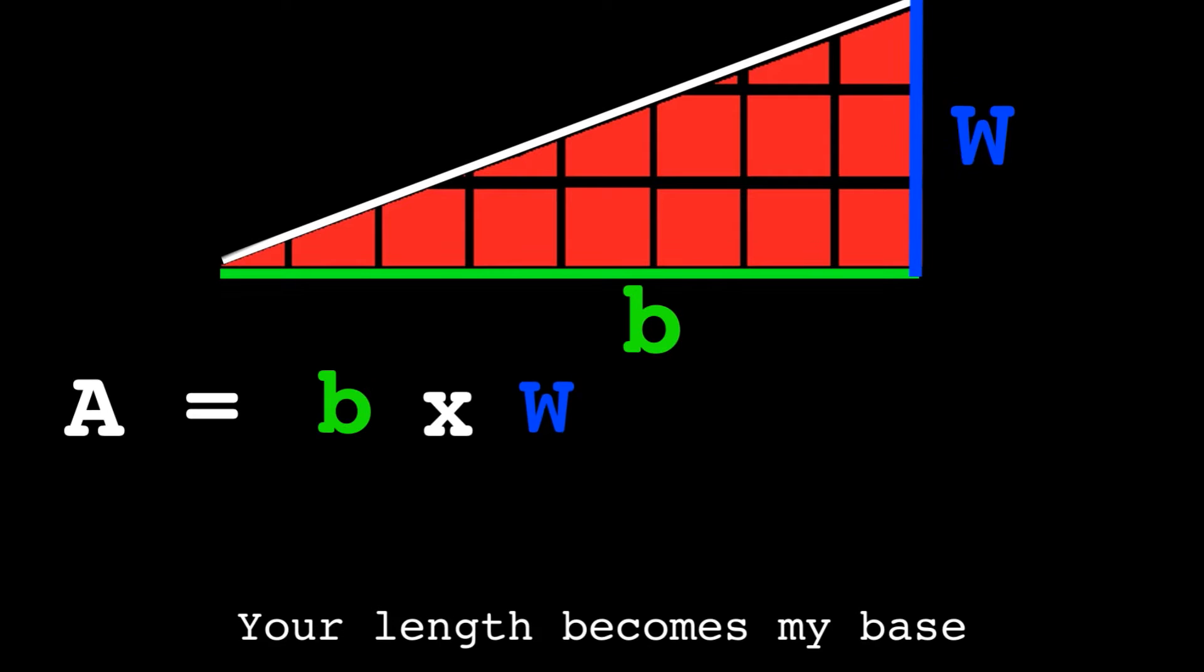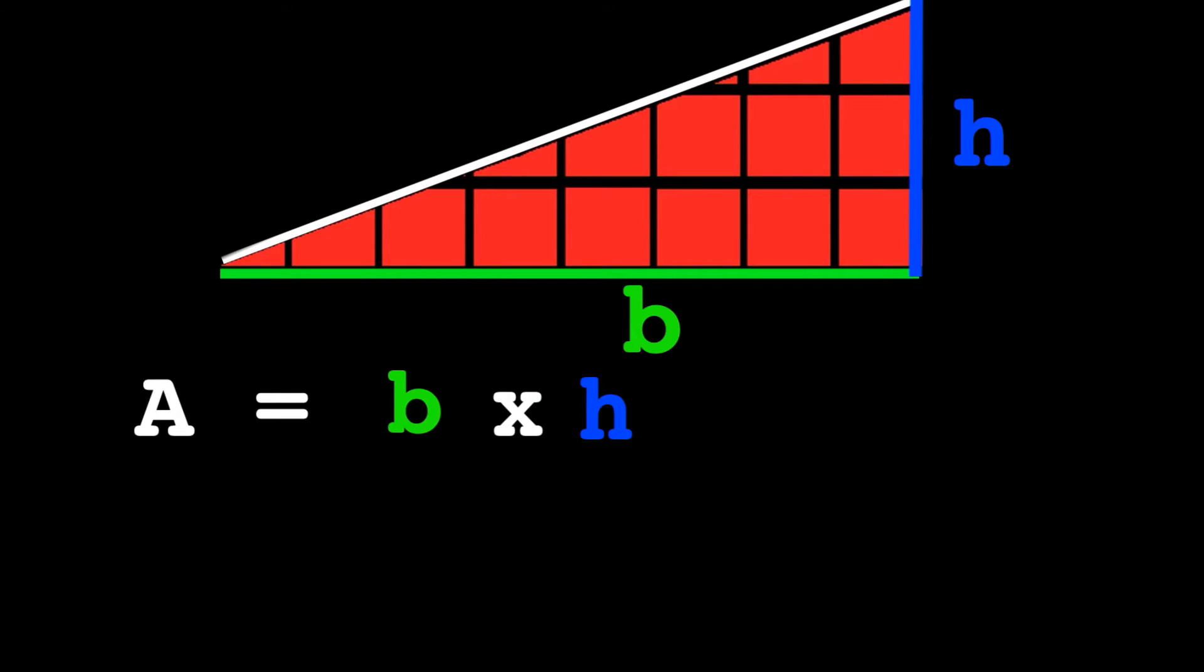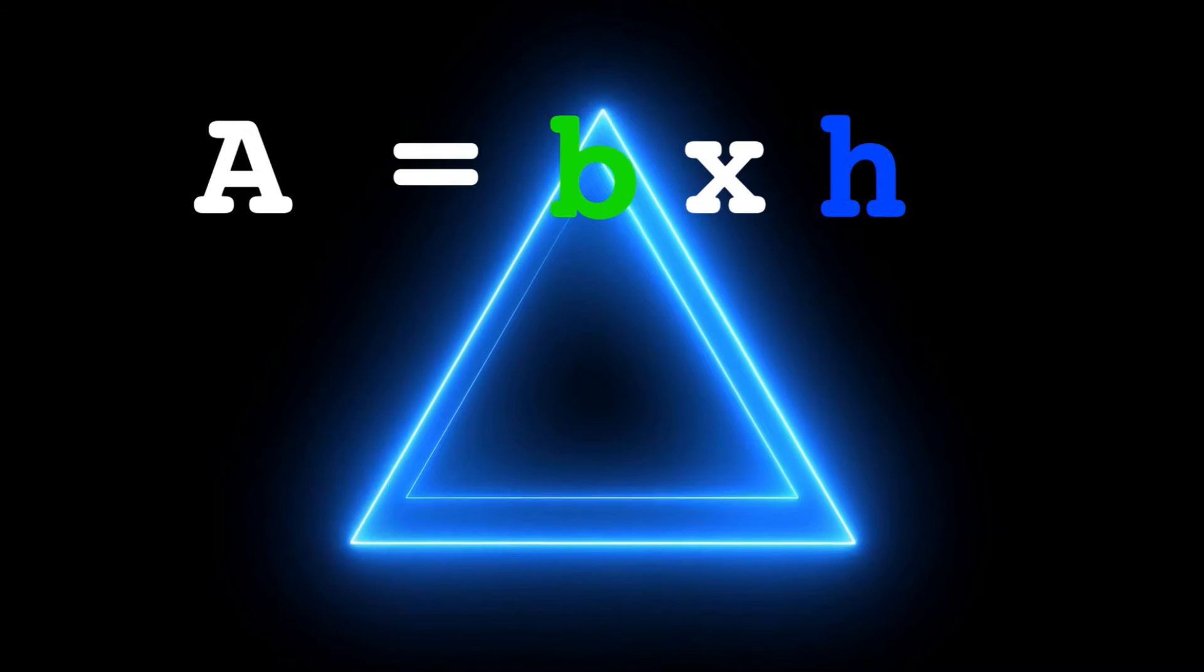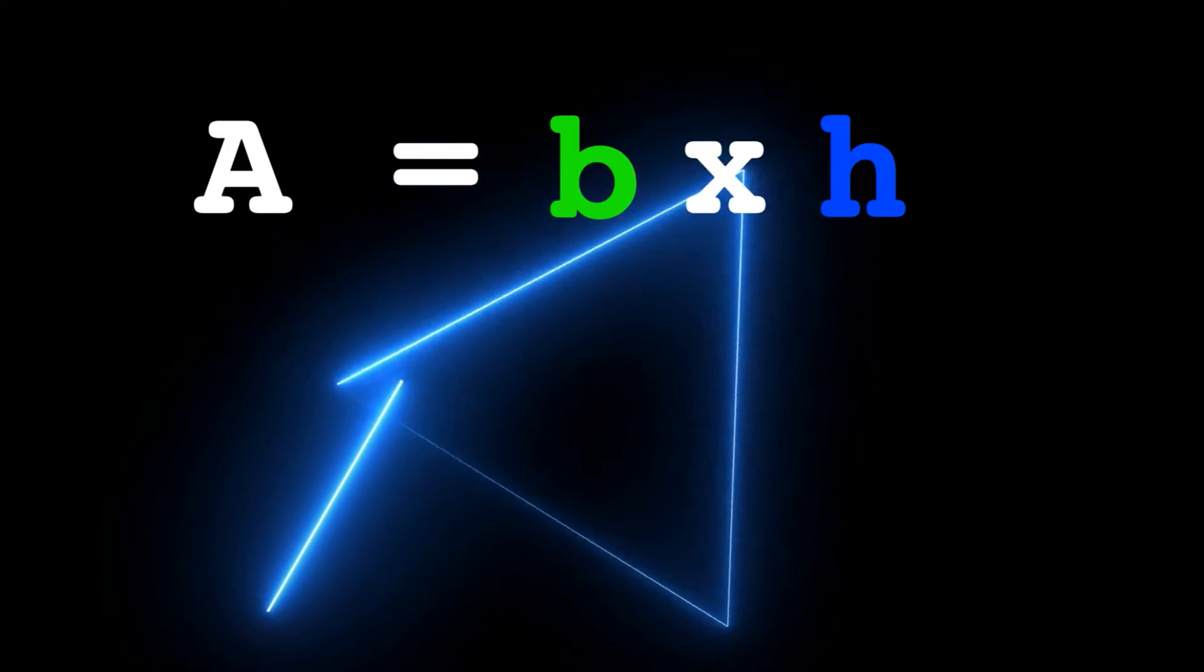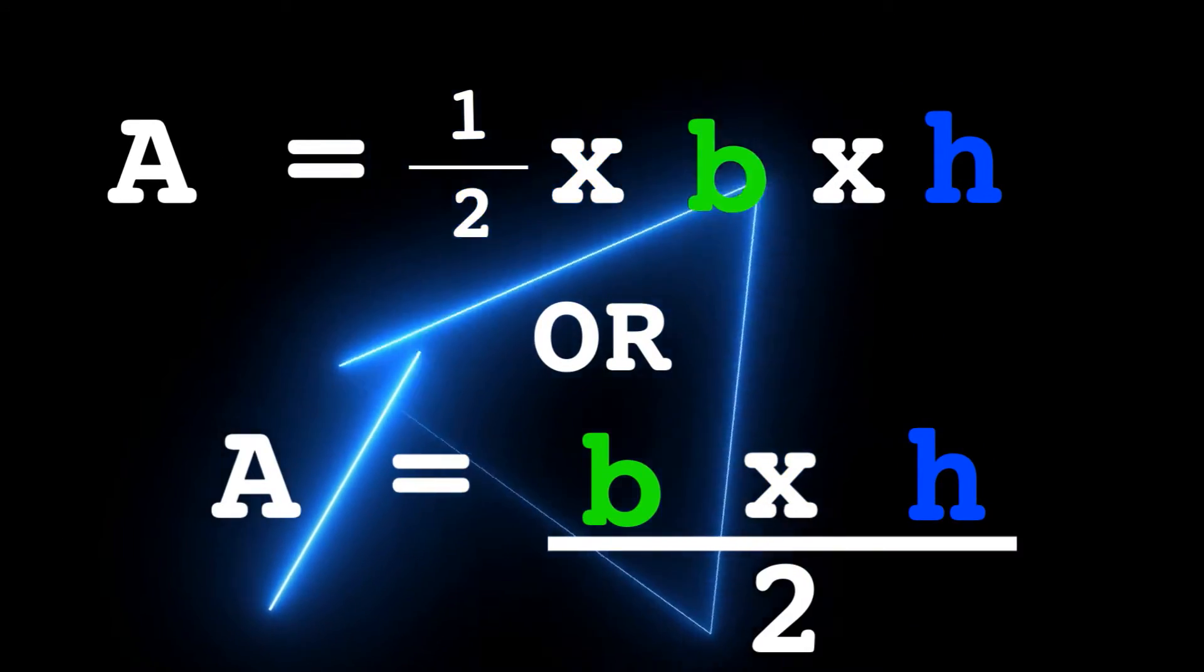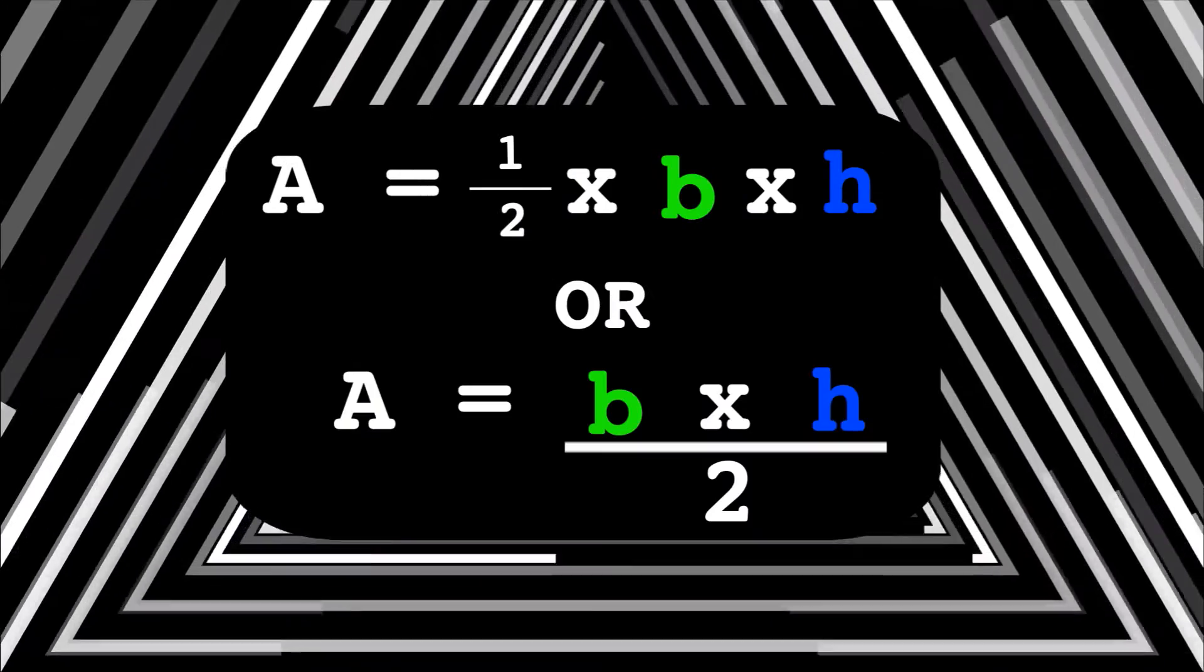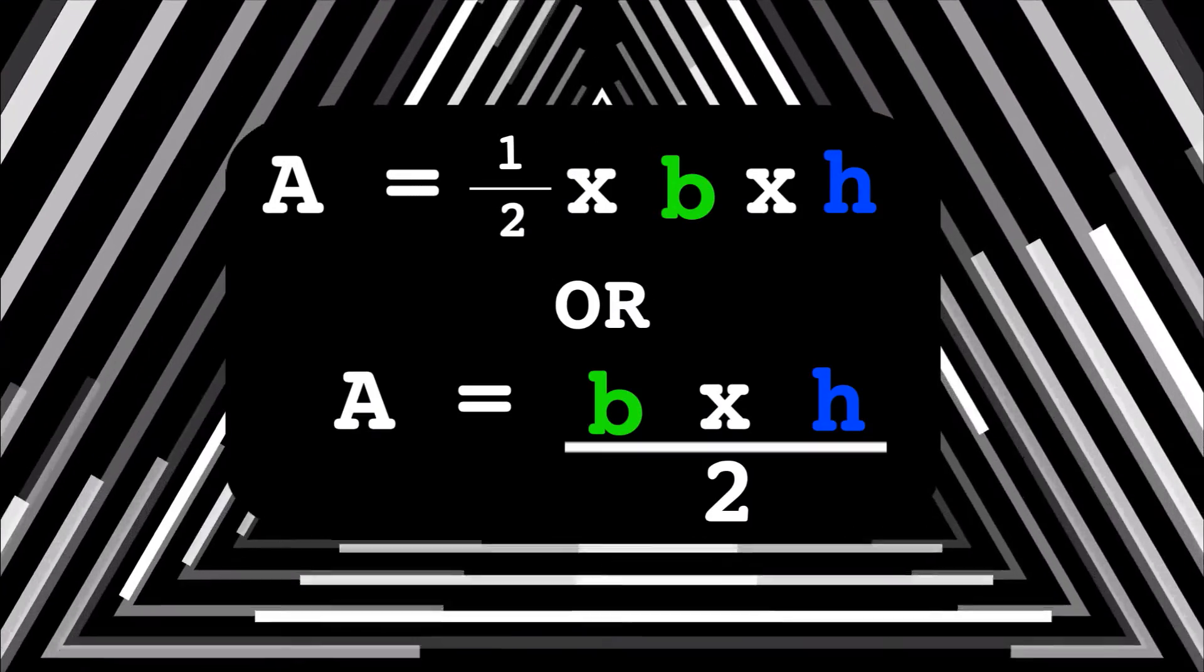I'm coming for you to take your place. Your length becomes my base and then your width becomes my height. Take your formula and rewrite. But since it takes two of me to make you, multiply by half and divide by two.